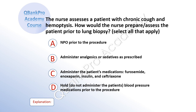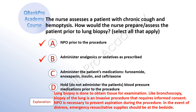The nurse assesses a patient with chronic cough and hemoptysis. How will the nurse prepare the patient prior to lung biopsy? Select all that apply. A, NPO prior to the procedure. B, administer analgesics or sedatives as prescribed. C, administer the patient's medications: furosemide, enoxaparin, insulin, and ceftriaxone. D, hold — do not administer the patient's blood pressure medications prior to the procedure. The correct answer is A, NPO prior to the procedure, and B, administer analgesics or sedatives as prescribed. Explanation: Lung biopsy is done to obtain tissue for examination. Like bronchoscopy, it is an invasive procedure requiring informed consent. NPO is necessary to prevent aspiration, and emergency resuscitative supplies should be at the bedside.